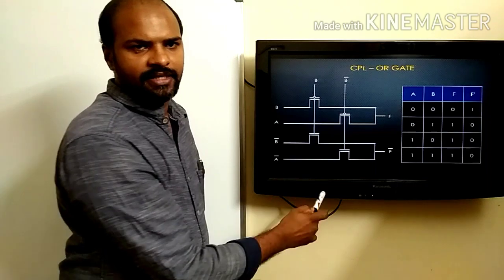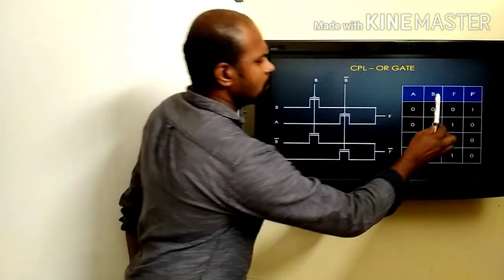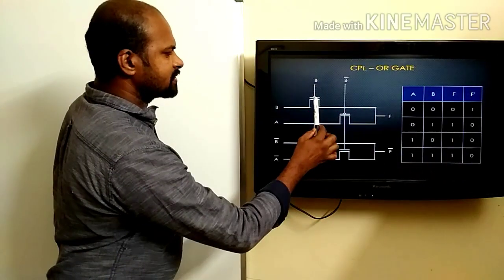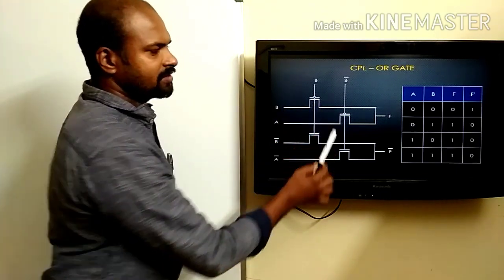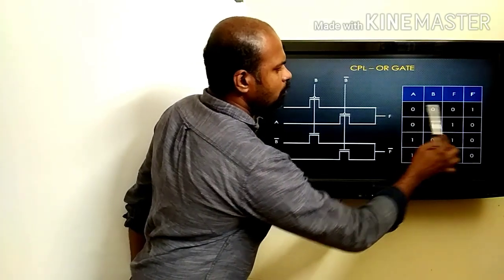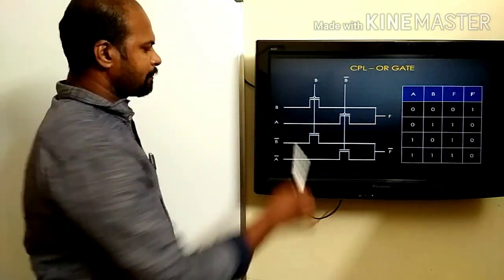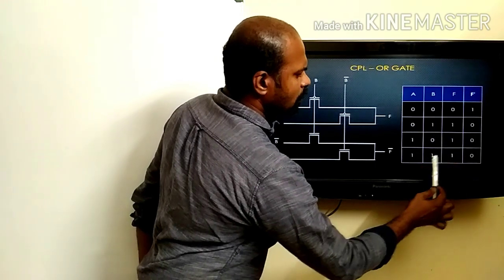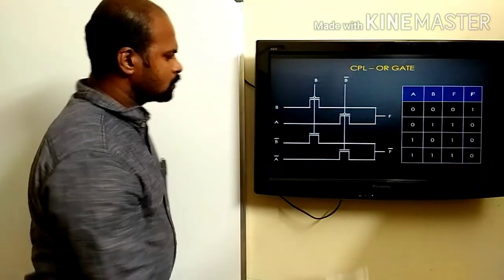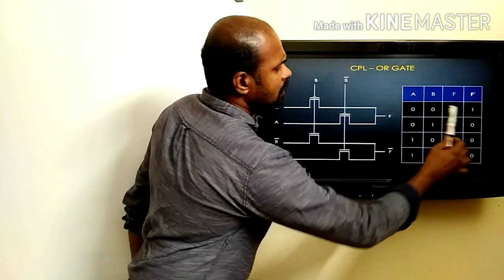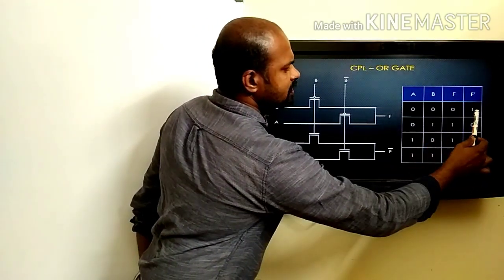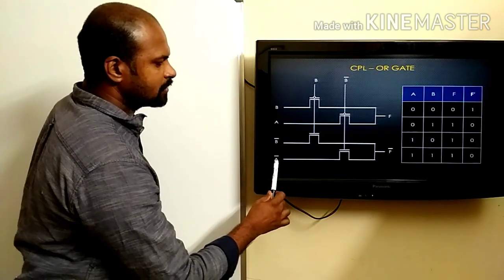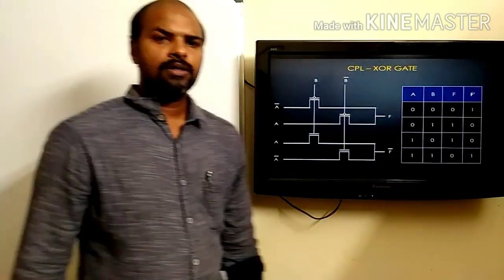In the OR gate, the connections are exactly the same — only these inputs change. When B equals logic one, the output is also logic one, so B itself is connected to this transistor. When B equals zero, the output is A, so A is used as the input. For realizing F-bar: when B equals logic one, the output is zero, so B-bar is used; when B equals zero, the output is the inverse of A, so A-bar is connected as the input. This is how we realize an OR gate.